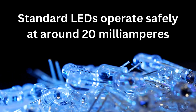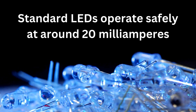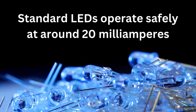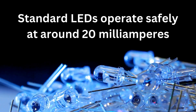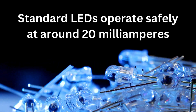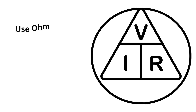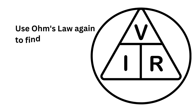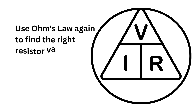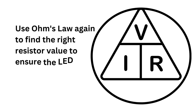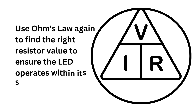Since our circuit will provide 41 milliamperes, this could damage the LED. To prevent this, we'll need to adjust our resistor value. We can use Ohm's Law again to find the right resistor value to ensure the LED operates within its safe limits.